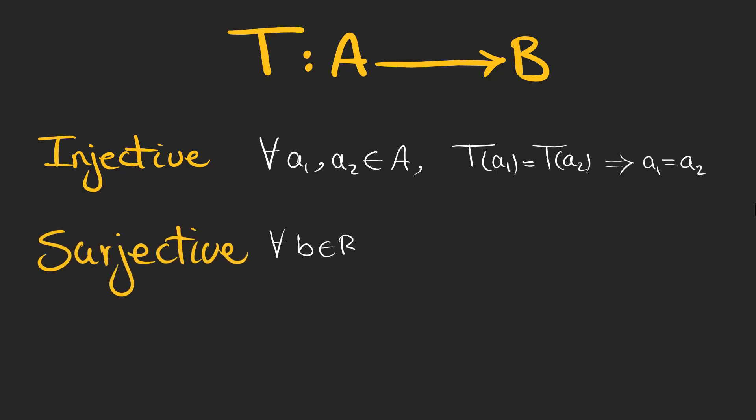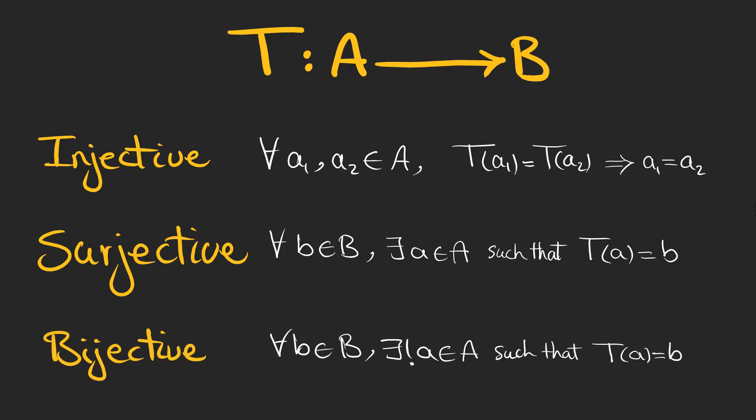A mapping is surjective if for every element in B, there exists an element in A that when mapped gives us this element in B. And finally, a mapping is bijective if for every element in B, there exists only one element in set A so that its mapping gives us the element in set B.